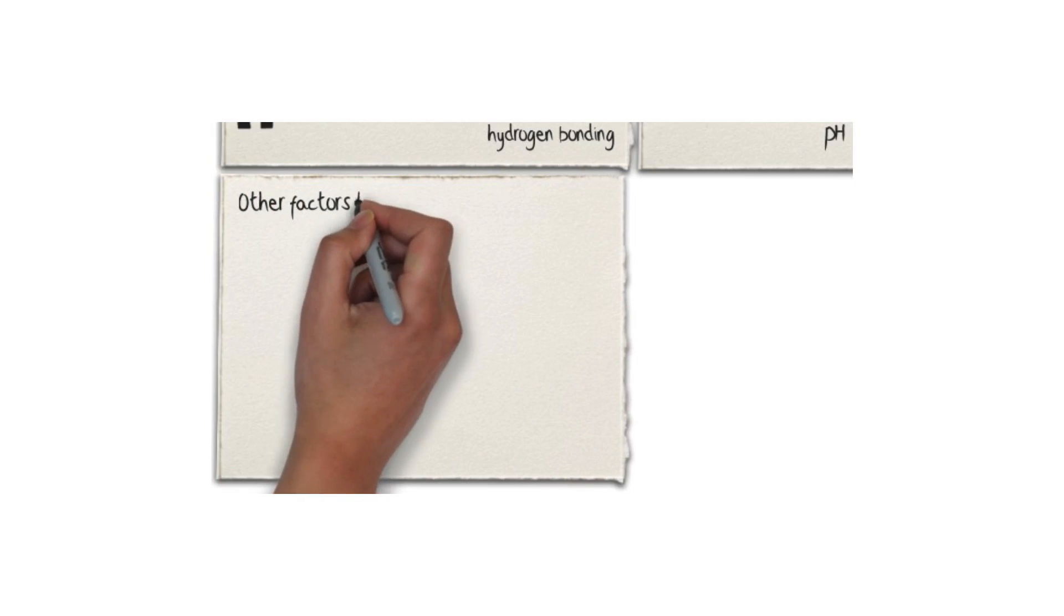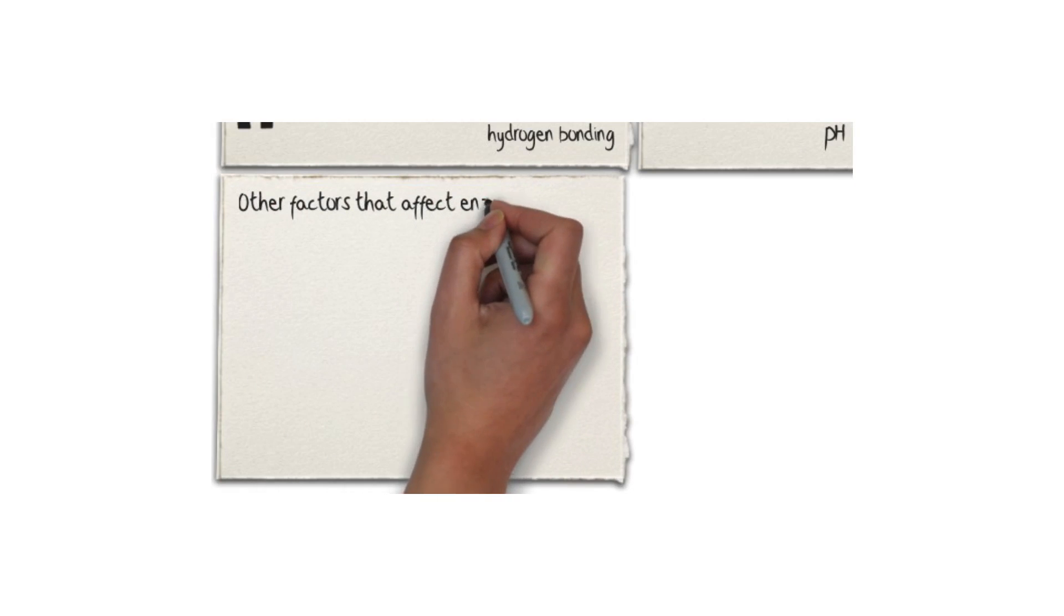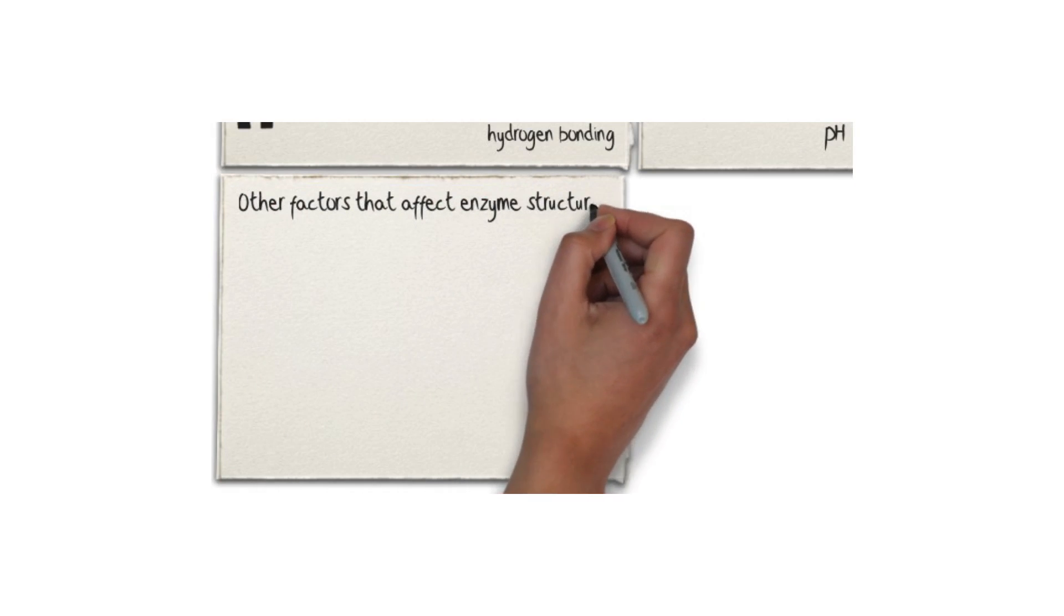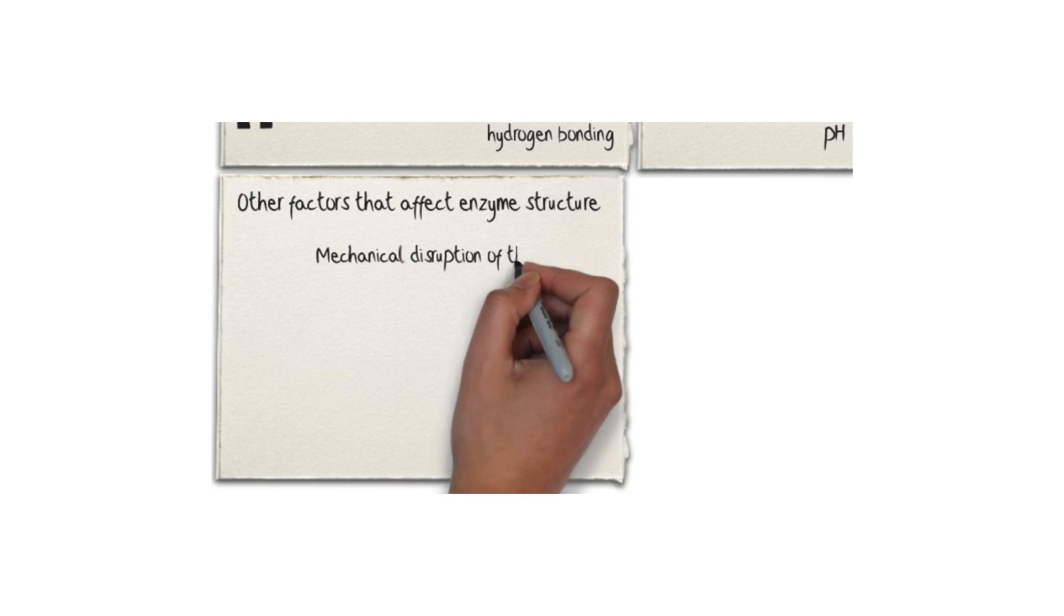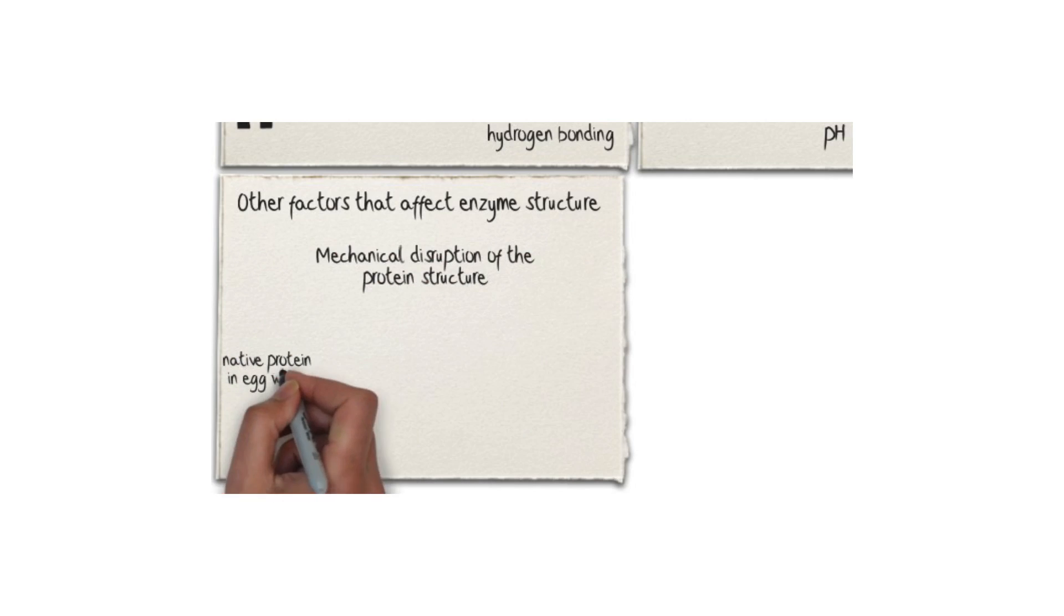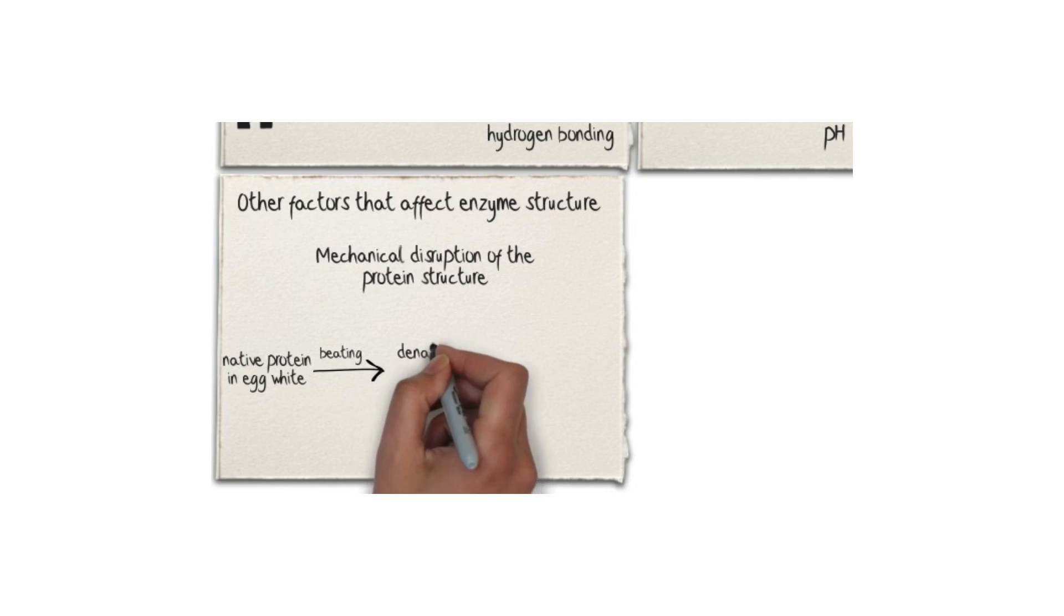There are other ways in which proteins, or enzymes for that matter, can be denatured. Mechanical disruption of the protein structure, for example, also causes protein denaturation. Scrambled eggs are a good example of mechanical denaturation of proteins.